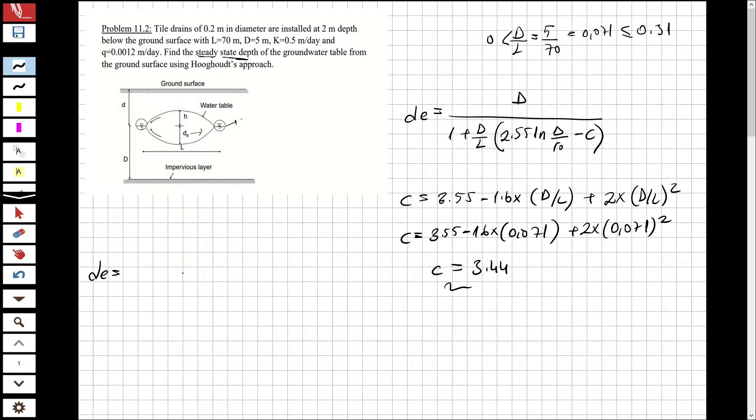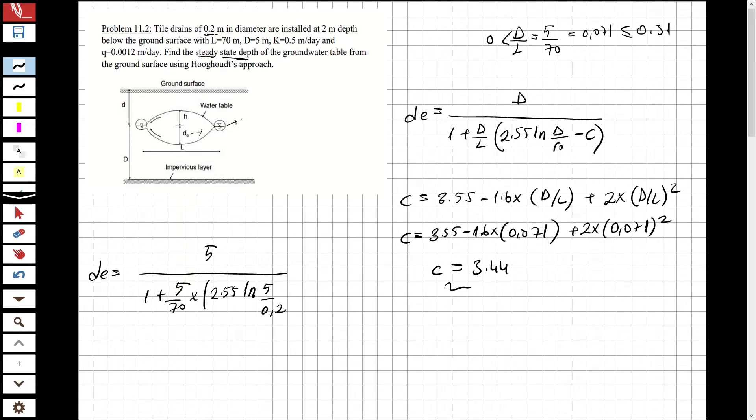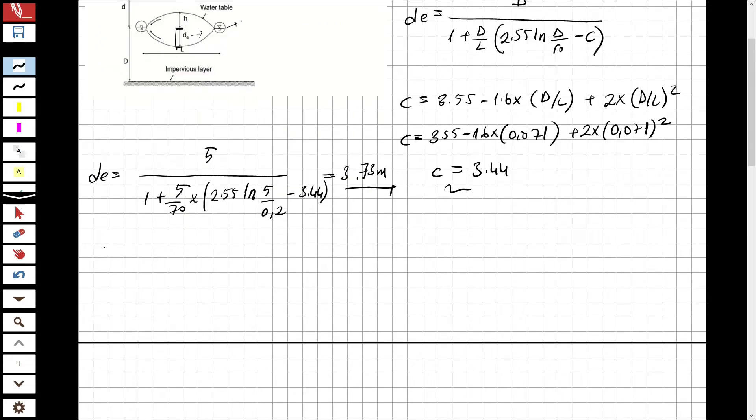d_e equals 5 over 1 plus 5 over 70 multiplied by 2.5... 5 over 0.2. The diameter of the drains is 0.2, and minus 3.44. From this formulation I'm going to obtain 3.73 meters as the equivalent depth.